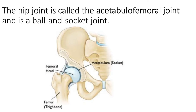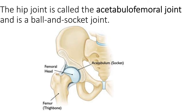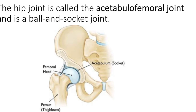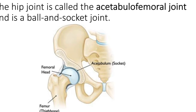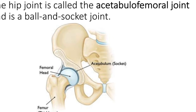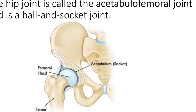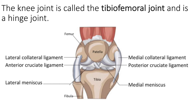The hip joint is called the acetabulo-femoral joint. It's also a ball and socket joint, so like all ball and socket joints it can do flexion, extension, abduction, adduction, circumduction, and rotation. Similar to the shoulder joint it has a socket, but this socket is a lot deeper — it's called the acetabulum on the os coxae bone — and the head of the femur sits inside that acetabulum.